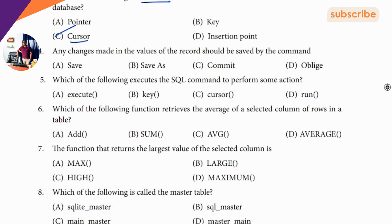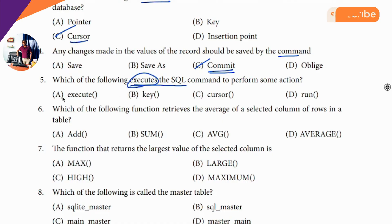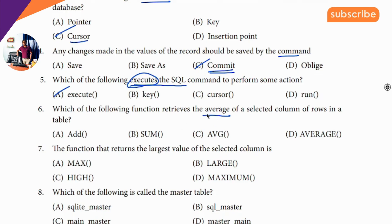Fourth question: array mark command — the answer is commit, so comm here is commit. Sixth question: retrieves the average — the clue is average, so the answer is the short form AVG. AVG is the short form for average.